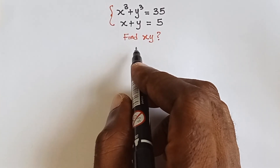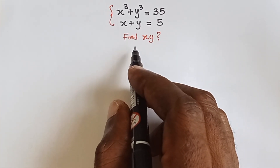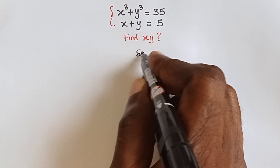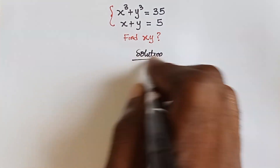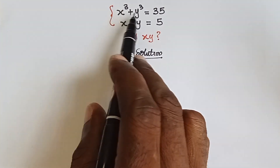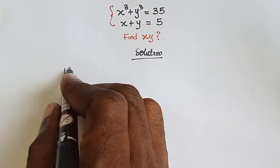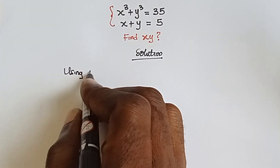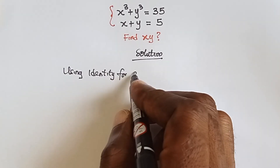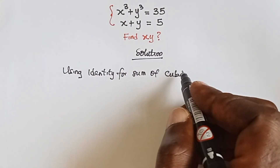Welcome back to my channel guys. In this video I want to show us the easiest way to solve this simultaneous equation. We are going to use the identity for sum of cubes for this first equation.